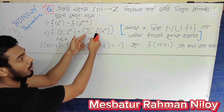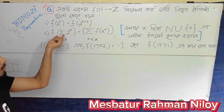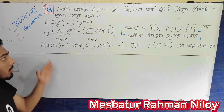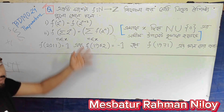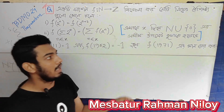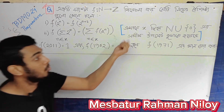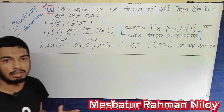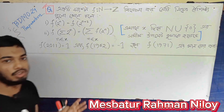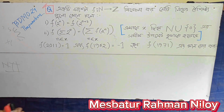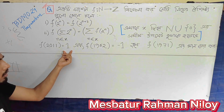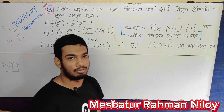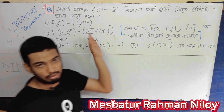We can see the summation of f of n, where n is an element of x. The x is the union including 0 and we can see n on the number 1, 2, 3, 4, 5, 6. So f of 2011 is equal to 1, and f of 1952 is equal to minus 1, and f of 1971 is equal to 1.